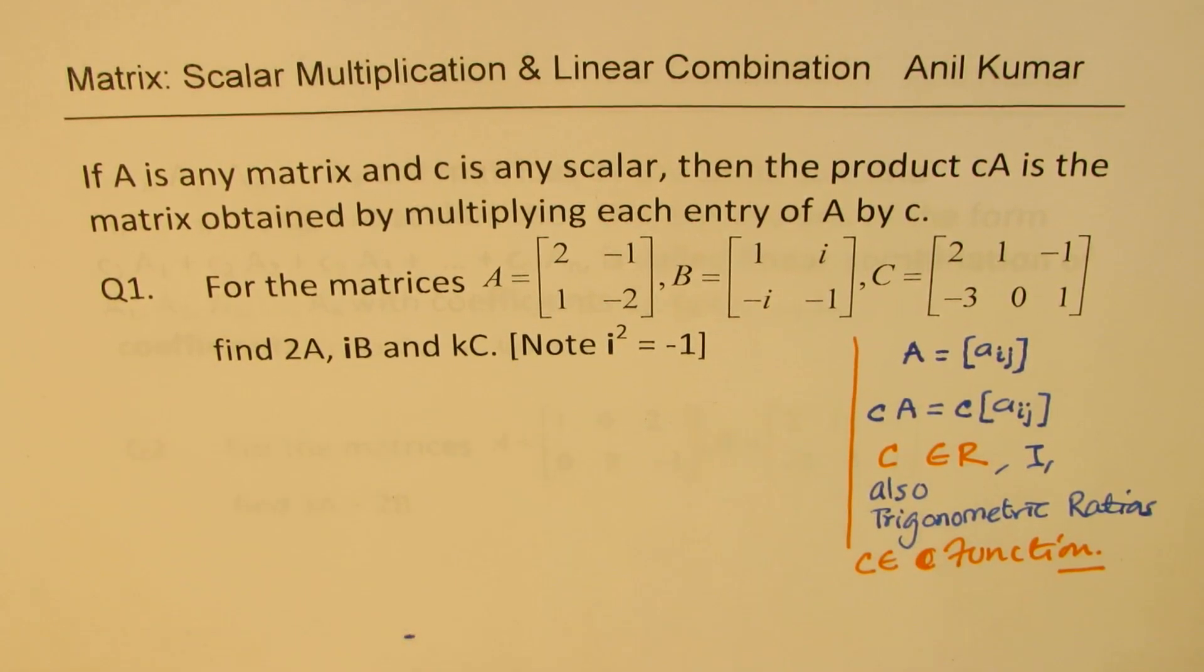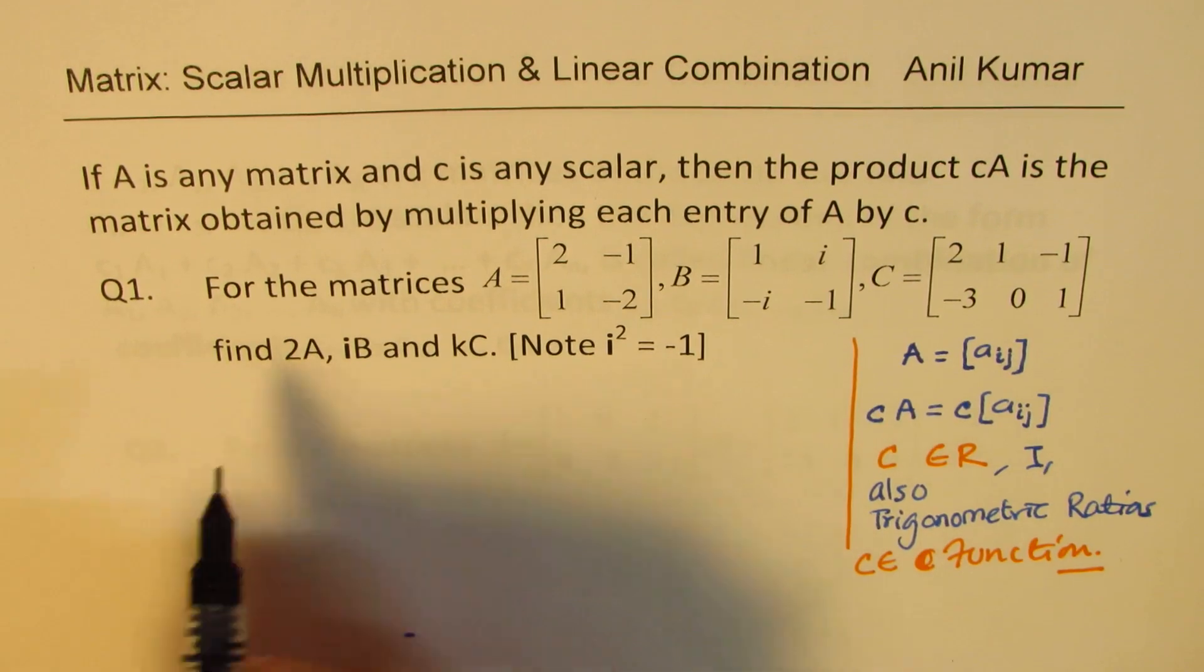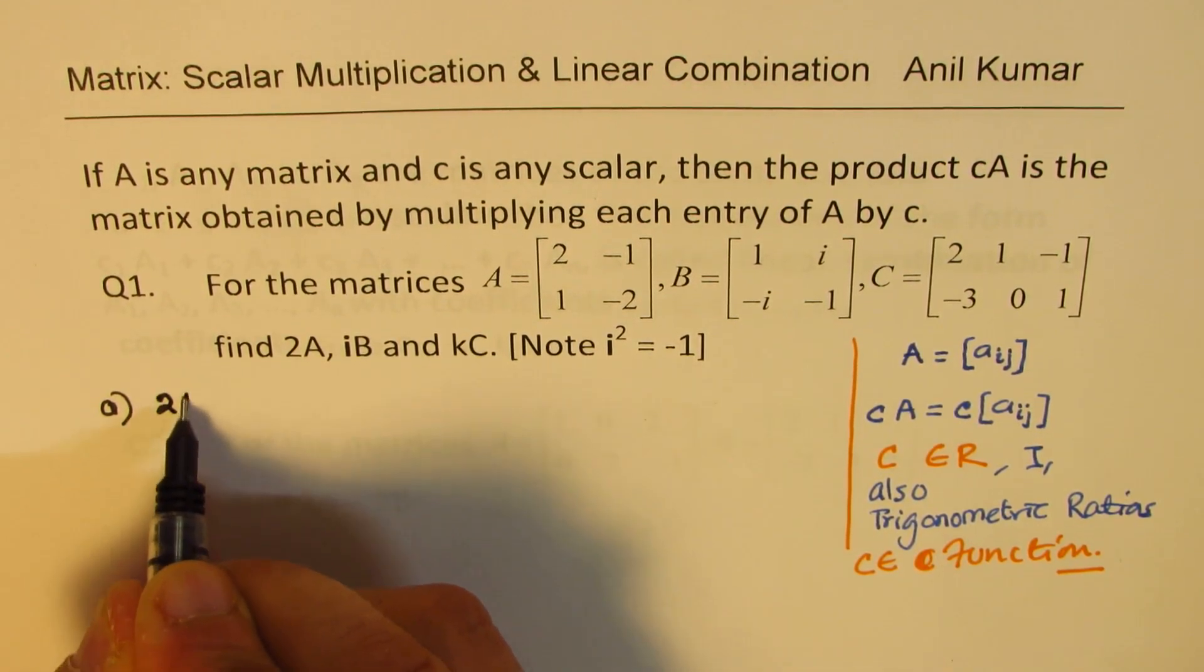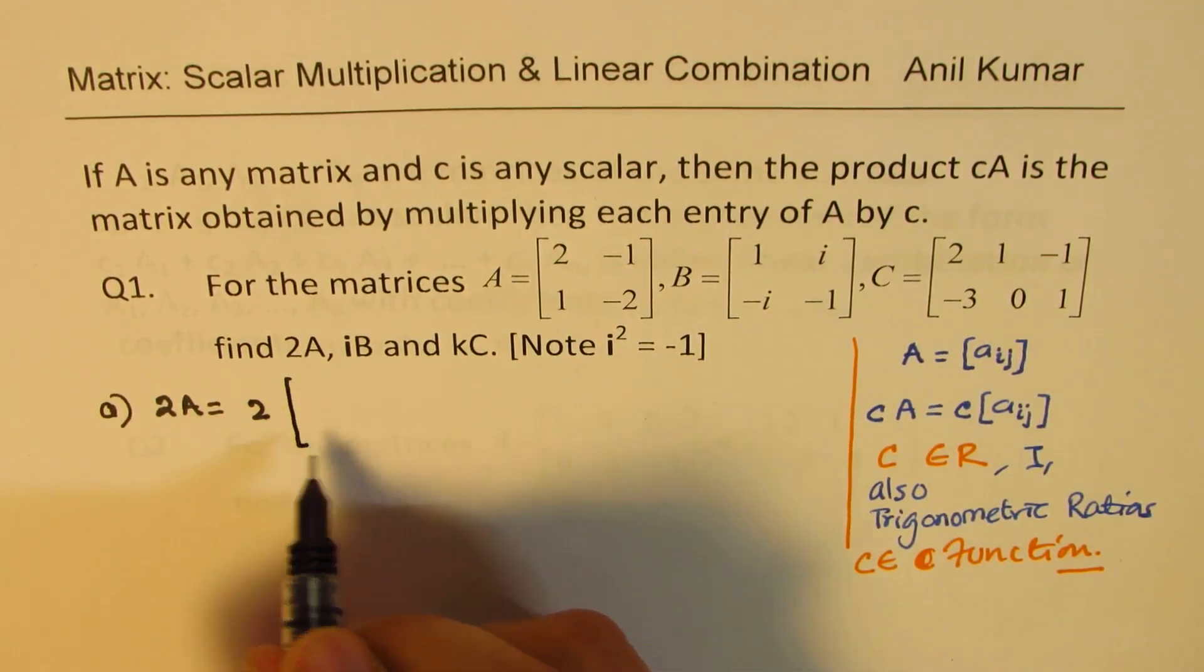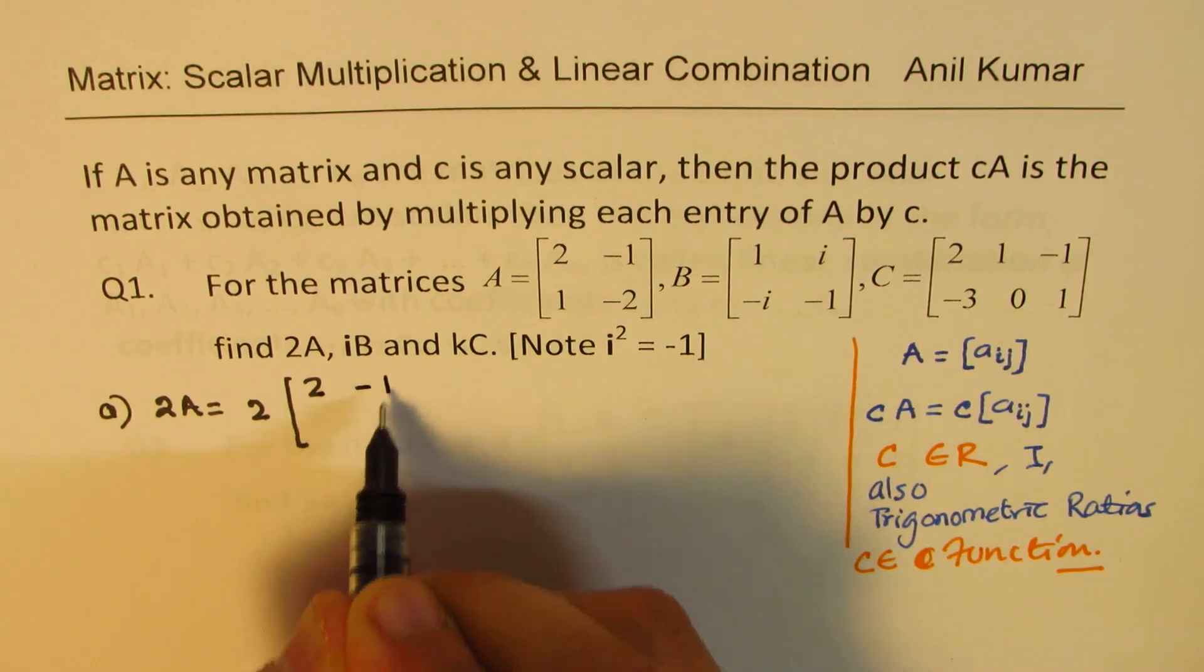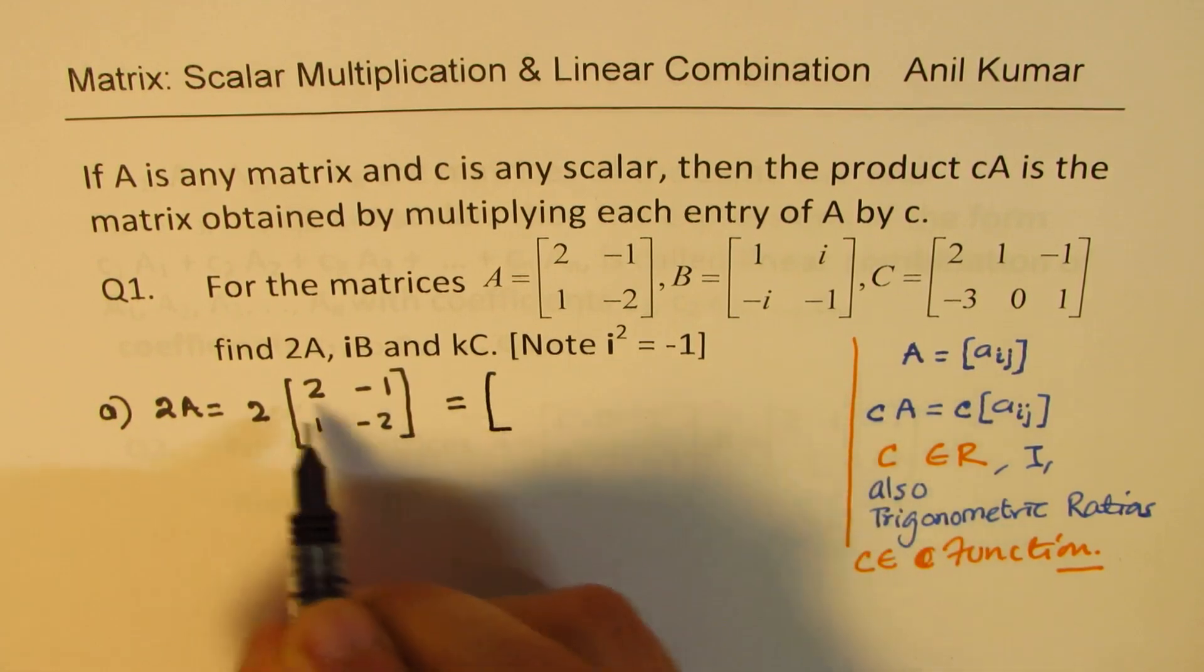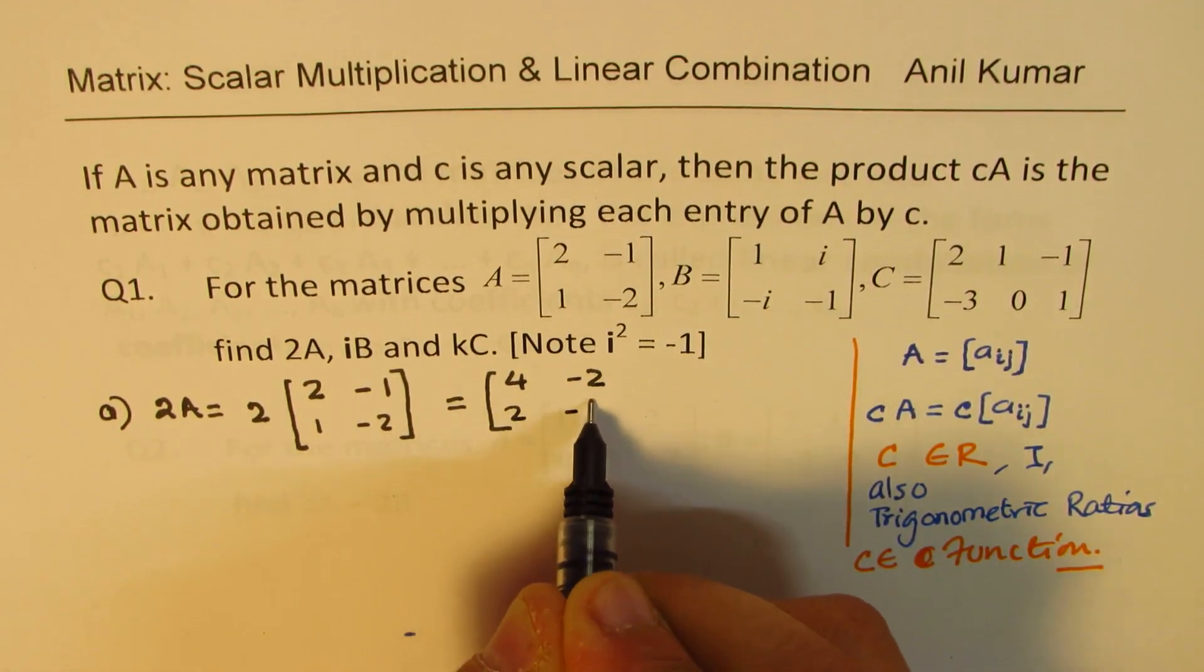Let's continue. We'll just solve this example, write down the solutions for each one of them and then move on. First one, we want to find what is two times A. The matrix A is given to us, we'll just multiply each and every element of this by two. So that be two times two is four, minus two, two and minus four. Correct.